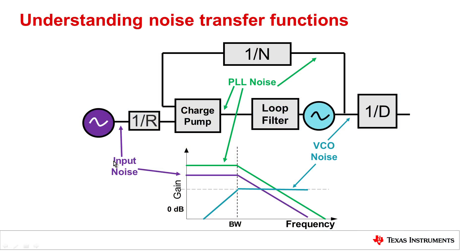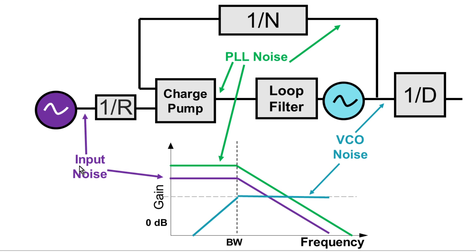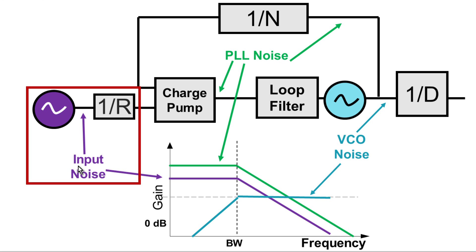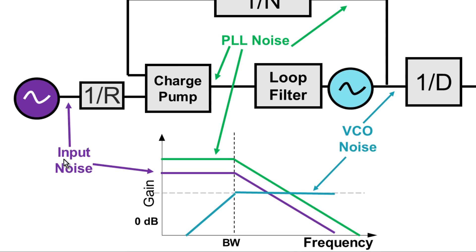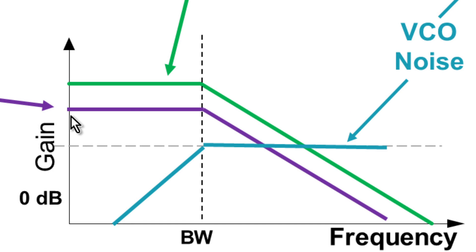The noise has basically three different classes. One is the noise from the input, whatever is being used. The input could be a crystal, an exo, recovered clock, or many other possibilities. This input noise is low-pass filtered up to the loop bandwidth, then beyond the loop bandwidth, it is attenuated.